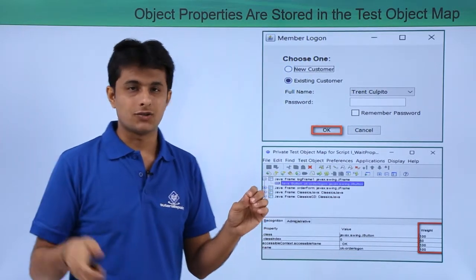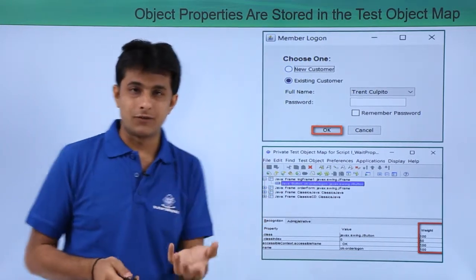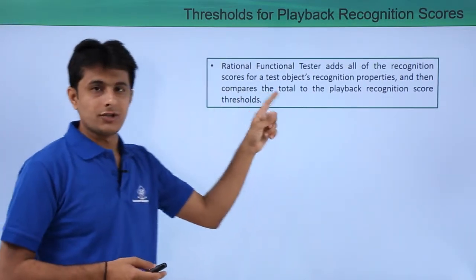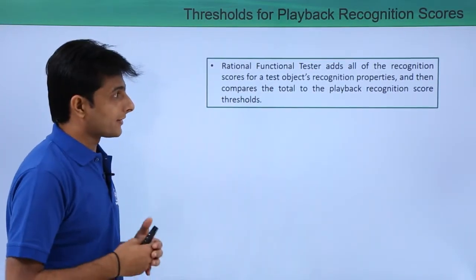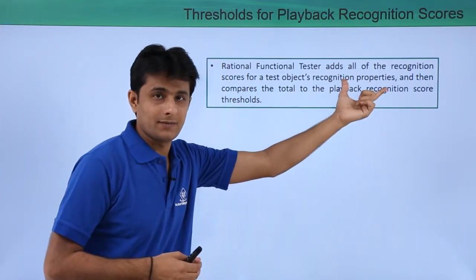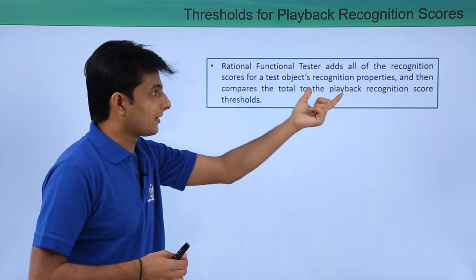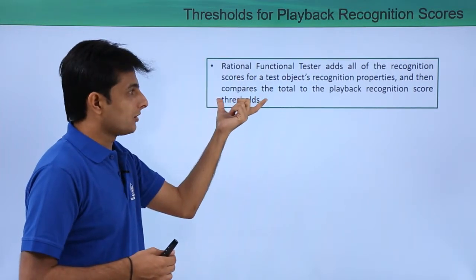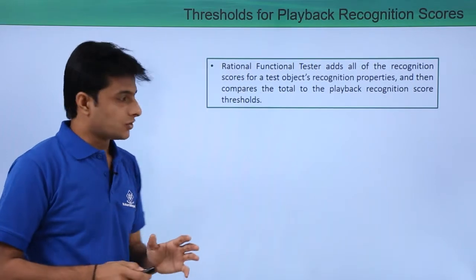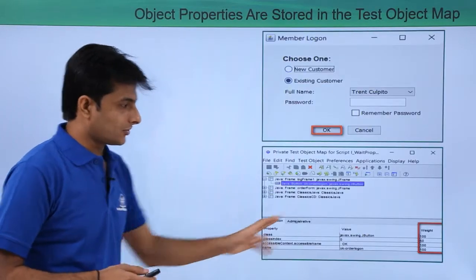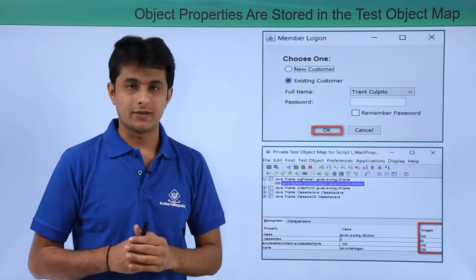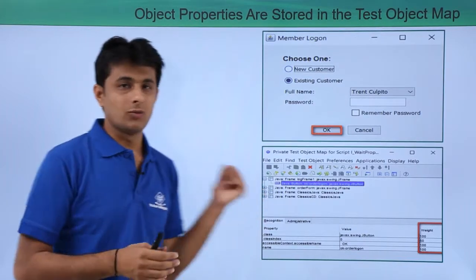The RFT definition states: Rational Functional Tester adds all the recognition scores for a test object's recognition properties, then compares the total to the playback recognition score thresholds. So you combine the weightages, multiply by 100, and compare with the threshold.